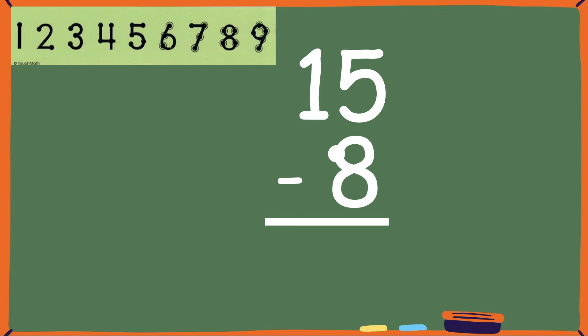15, 14, 13, 12, 11, 10, 9, 8, 7. So the difference, or answer, is 7. 15 minus 8 equals 7.